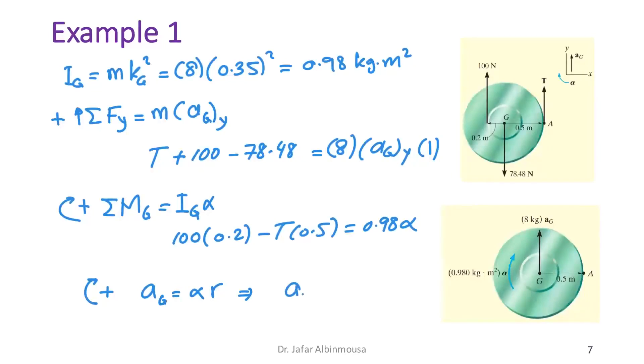This gives a_G = 0.5·α as the third relation.